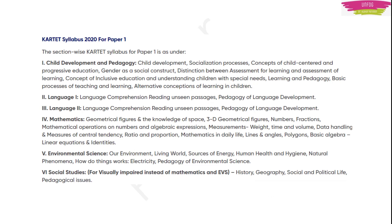In Karnataka TET, you will have two papers: paper 1 and paper 2. In paper 1, you will have six parts. First is child development and pedagogy. Second is your first language and third is your second language. Fourth is mathematics. Fifth is environmental science. And sixth is social studies.